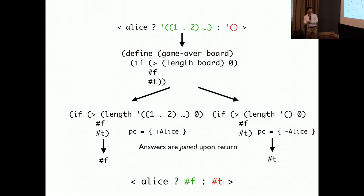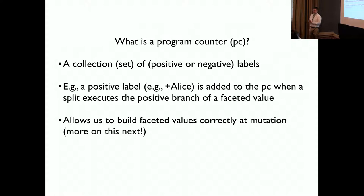I will explain more about our program counter in a later slide. The answers from both evaluations are drawn up to return to construct a new facet value. And if we evaluate each branch, we can see at the end the new facet value will be Alice, false, and true.